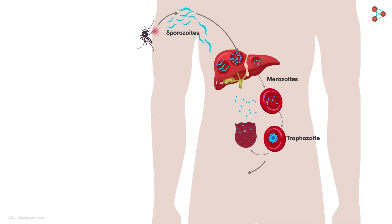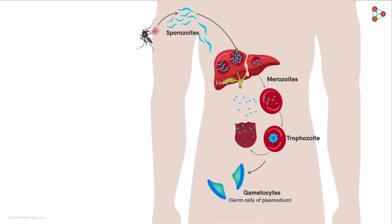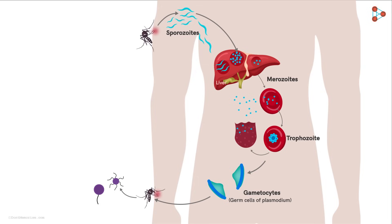The other fate of the Trophozoites is entering a sexual cycle, whereby the Trophozoites give rise to two different Gametocytes. Gametocytes, in simple terms, are like the germ cells of Plasmodium. When a non-infected mosquito approaches the infected human for a blood meal, these Gametocytes quickly pass into the mosquito's body with the sucked blood. In the mosquito's body, both male and female Gametocytes fuse to form a Zygote.